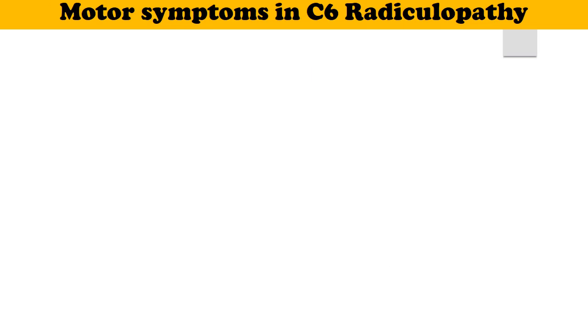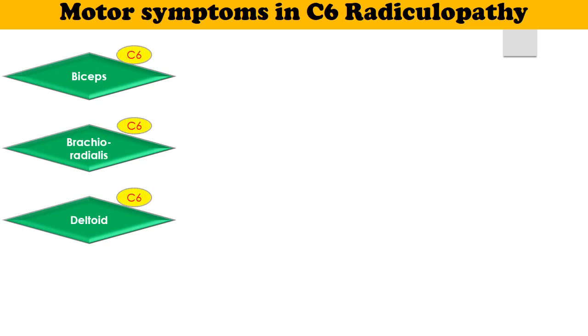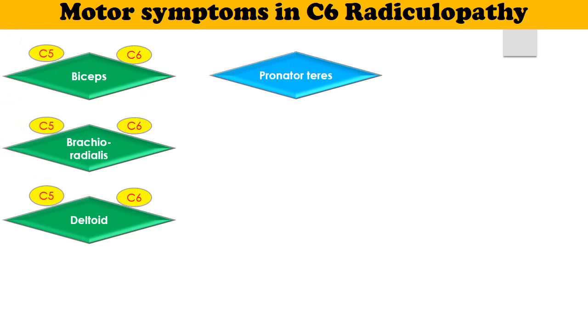The muscles which can be weak in C6 Radiculopathy are the muscles supplied by the C6 root. Biceps, brachioradialis, and deltoid are supplied by the C6 root in addition to the C5 root. The muscles pronator teres,